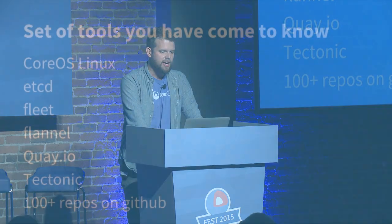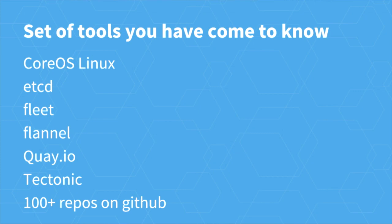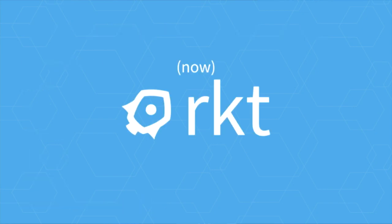CoreOS Linux and the associated projects — etcd, fleet, flannel, Rocket, and so on — are all open source components intended for companies that are building systems. Many of you here are using one or many of these components together to build the projects you want. Tectonic is our version where we pull all these things together as a product. We are explicitly differentiating the brands so our open source projects can become common internet infrastructure, and if you'd like CoreOS Inc.'s help working with all of those tools, that's done under the Tectonic brand.